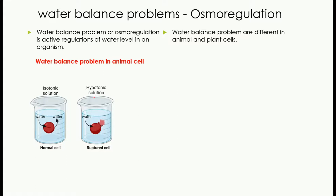In the case of a hypotonic solution, the solute concentration outside the cell is very low but inside the cell the solute concentration is very high. So the water molecules will start moving inside the cell to maintain the water balance or solute concentration. As water keeps going inside the cell, the cell will have so much water that it cannot resist anymore and the cell will rupture or burst.